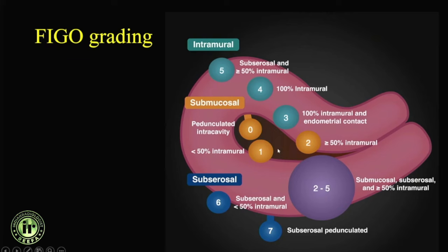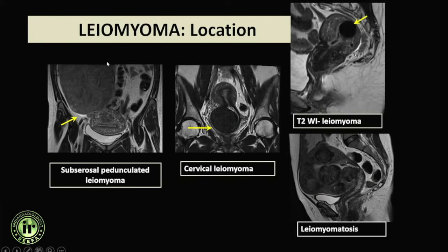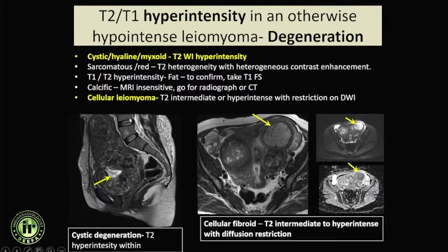Fibroids have typical MRI appearances: a whorled pattern, well-defined morphology, and most are homogeneously T2 iso- to hypointense. With increasing size and degeneration — hyaline or myxoid — we see heterogeneity within these fibroids. Heterogeneity alone is not of major concern; what is important is to look at other sequences for sarcomatous changes. Degeneration types include cystic, hyaline, and myxoid.